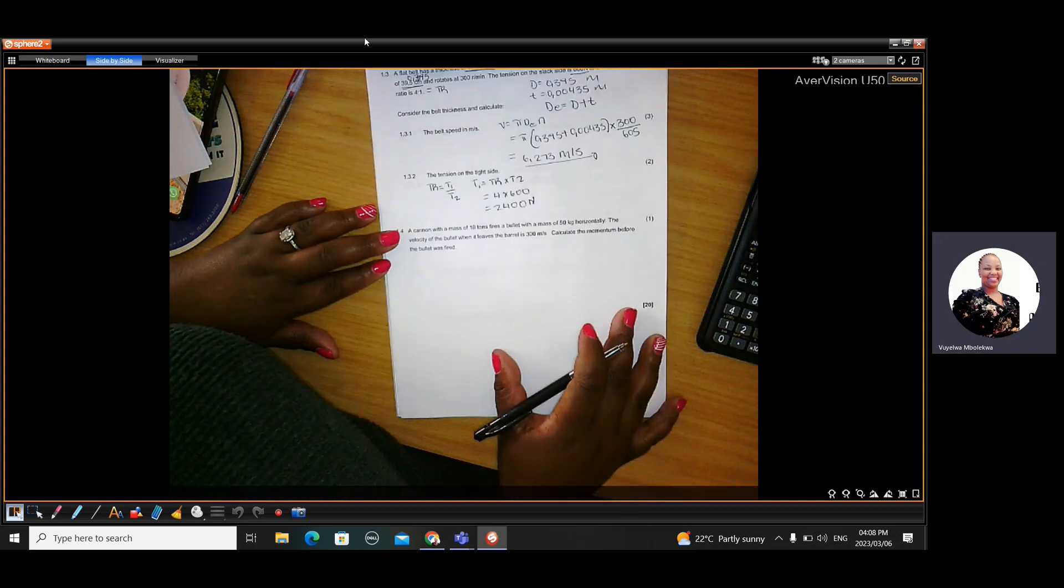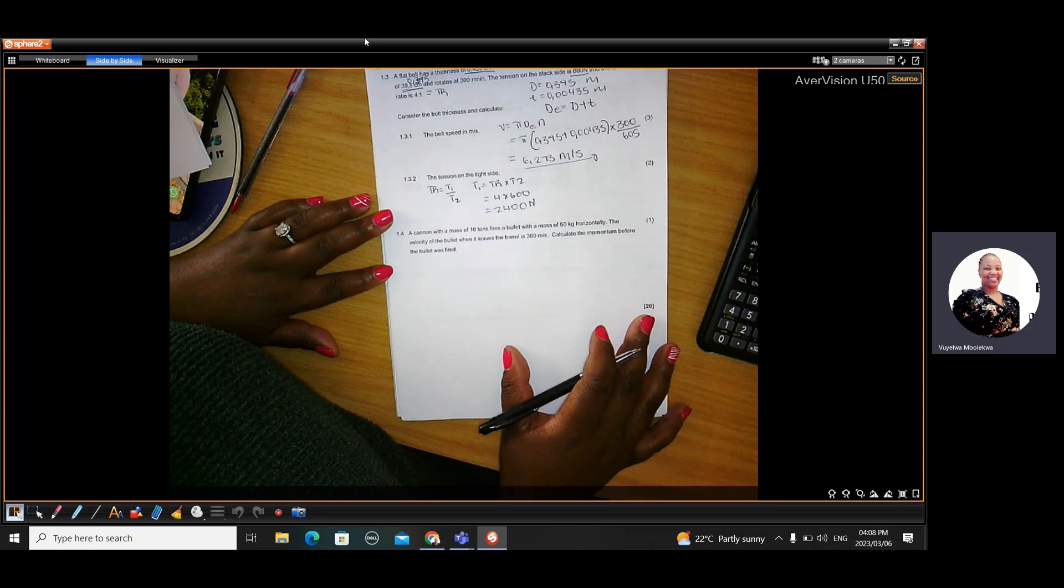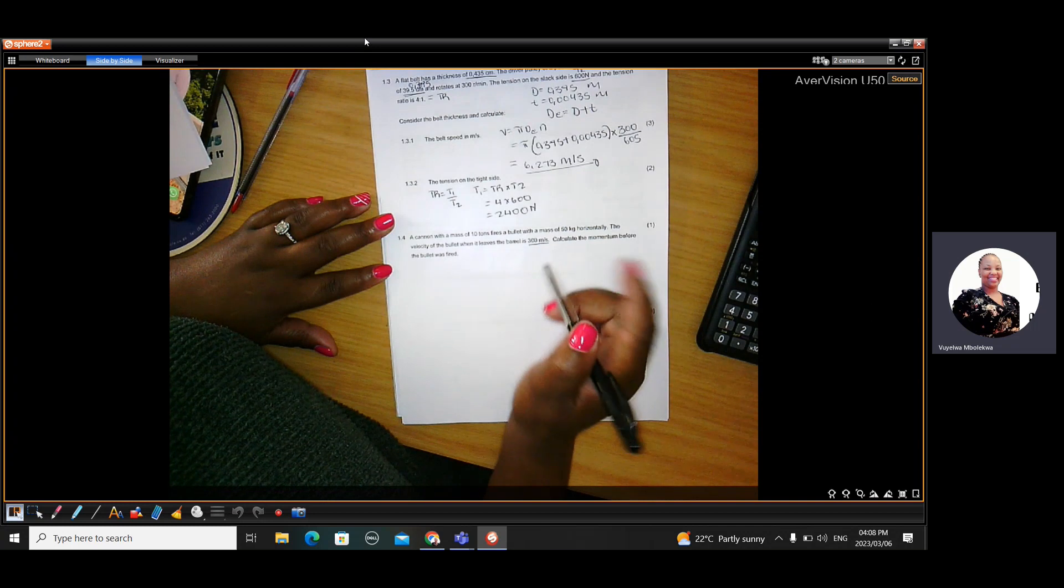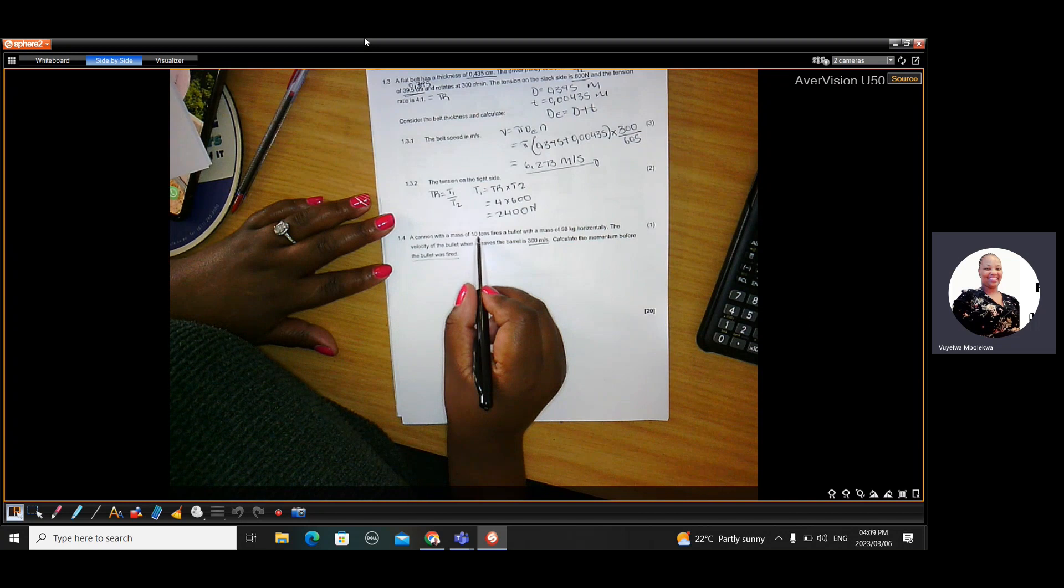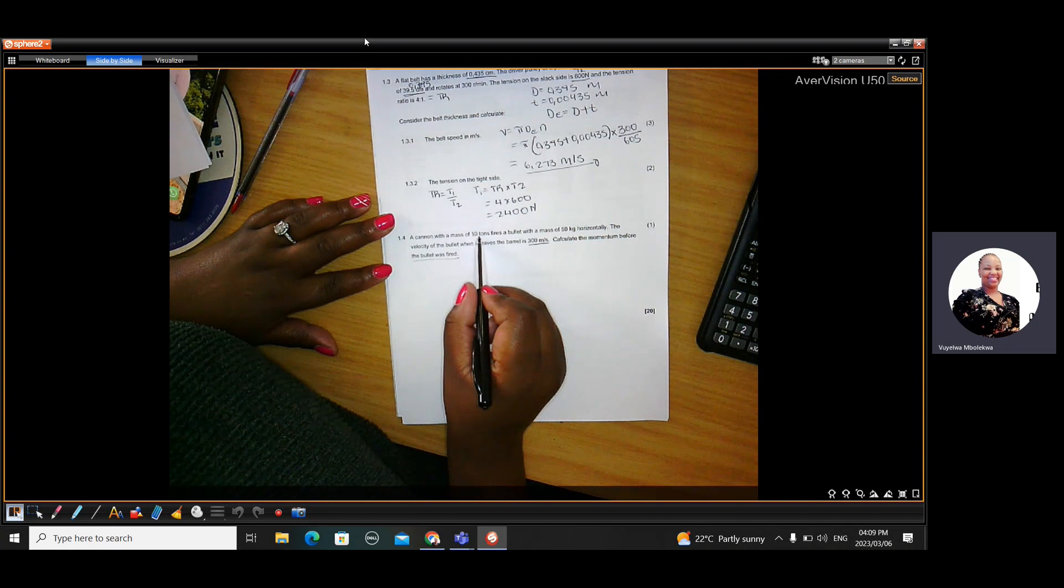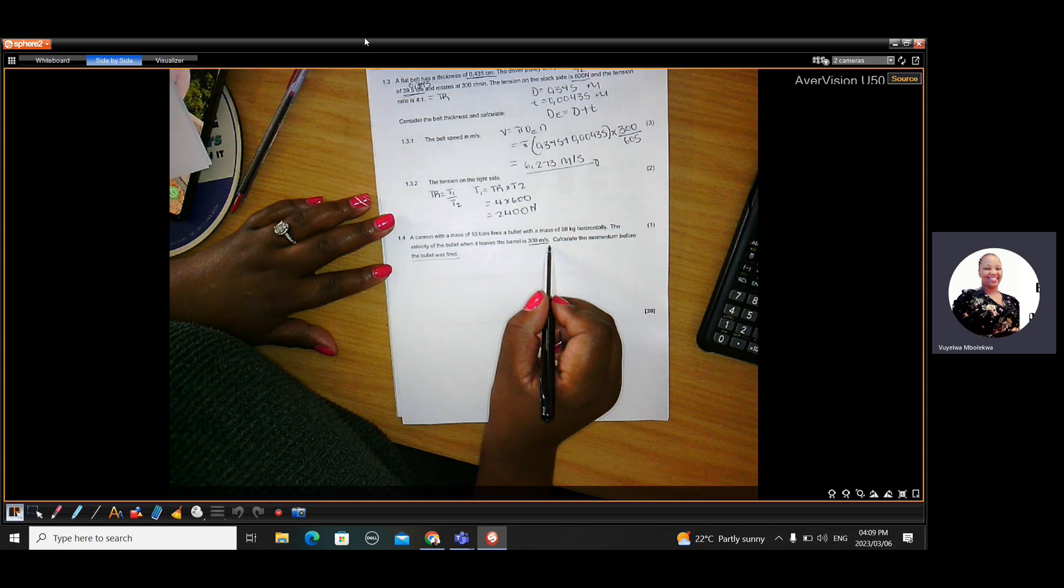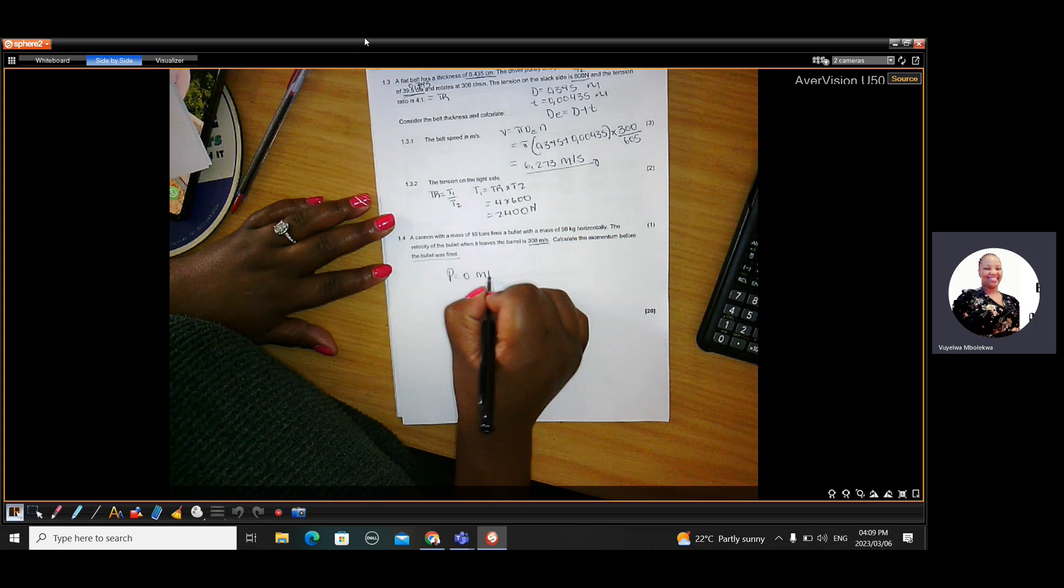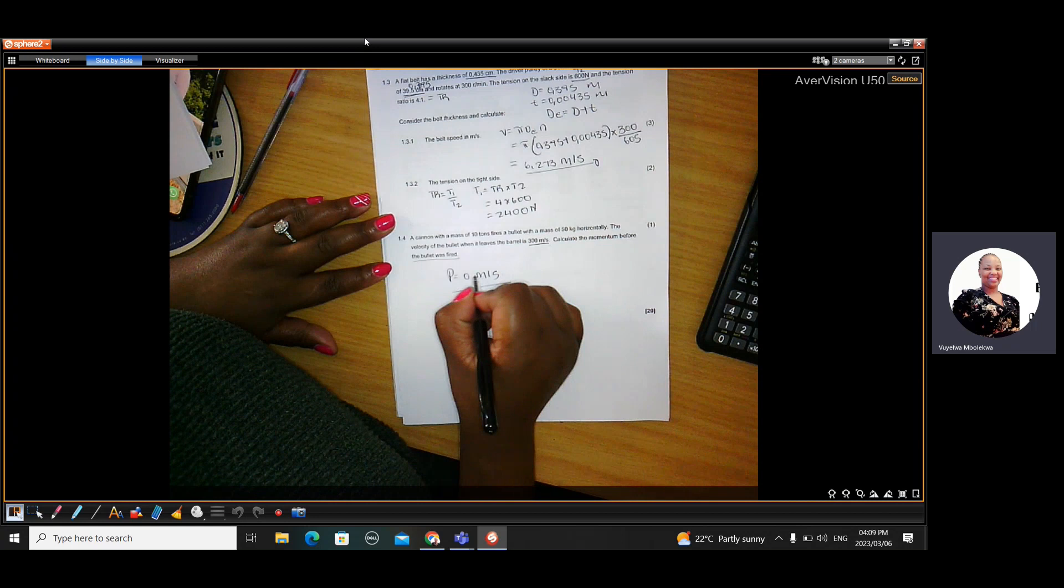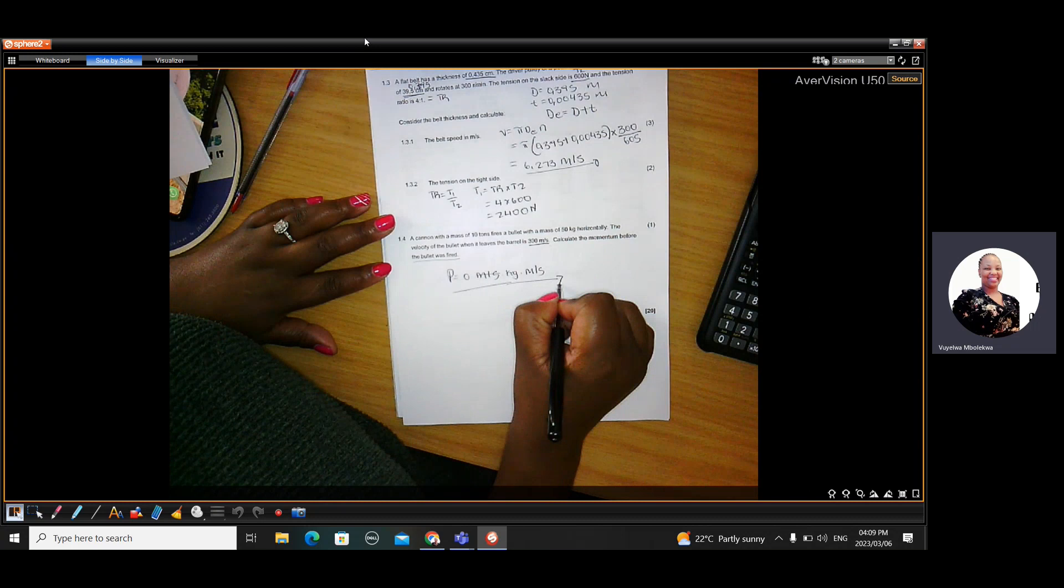Then question 1.4 says, a cannon with a mass of 10 tons fires a bullet with a mass of 50 kilograms horizontally. The velocity of the bullet when it leaves the barrel is 300. You must now remember this is after the trigger was pulled. Calculate the momentum before the bullet was fired. So before the bullet was fired, the cannon was standing still as well as the bullet was standing inside the barrel standing still. So that momentum is going to be zero because there's no movement there. You only get momentum. Momentum is kilogram meter per second. You only get momentum when you have velocity as well.